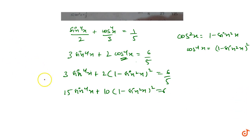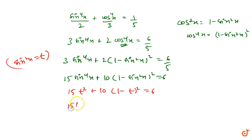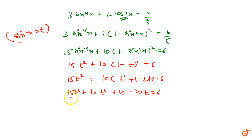To make calculation easy, we put sin²x = t. So we have 15t² + 10(1 − t)² = 6. Expanding (1 − t)² using the identity gives t² + 1 − 2t, so we get 15t² + 10t² + 10 − 20t = 6, which simplifies to 25t² − 20t + 4 = 0.